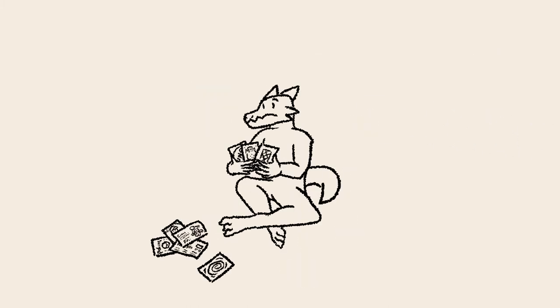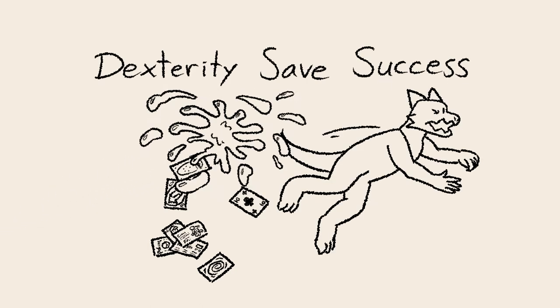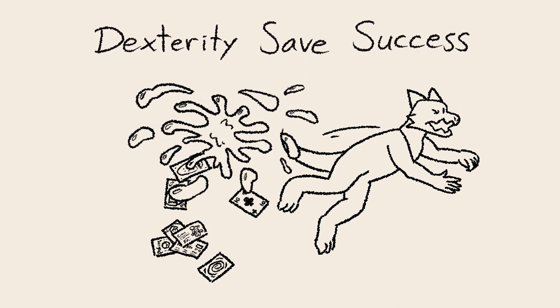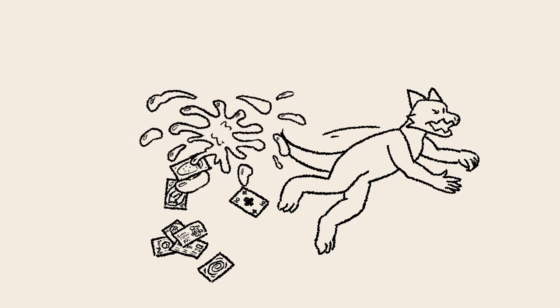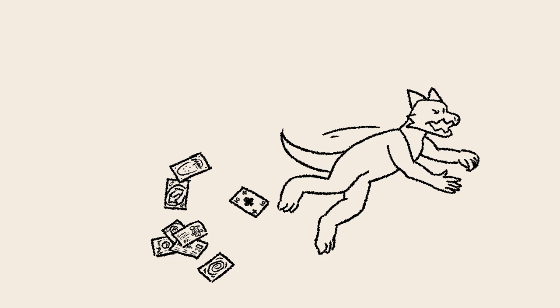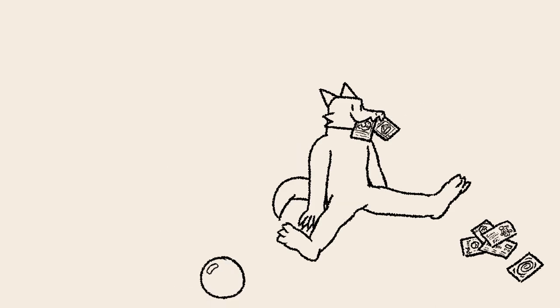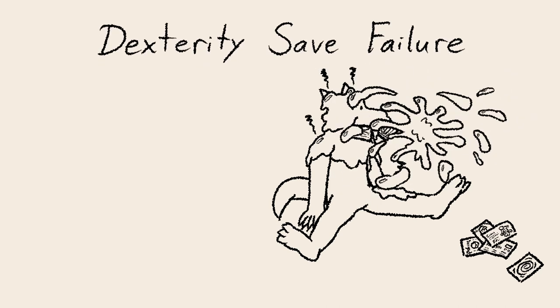The bubble of acid is then hurled at its target. Each targeted creature has an opportunity to dodge by making a dexterity saving throw. If they roll equal to or greater than your spell save DC, they avoid all damage. This means the spell is less effective against agile creatures. If they fail to dodge, they take a single burst of acid damage.